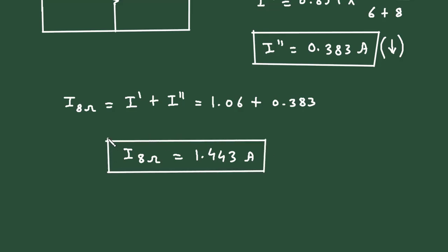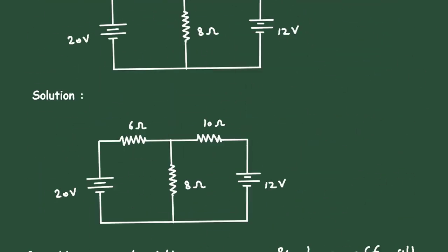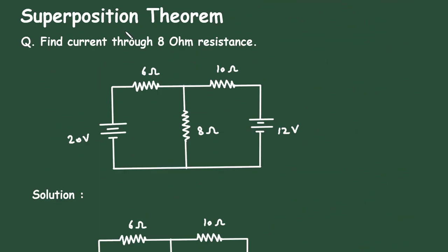This is how we can find the current by using the Superposition Theorem. Check the link in the comment section and install the app for free to get the notes of electrical circuits. Thanks for watching.